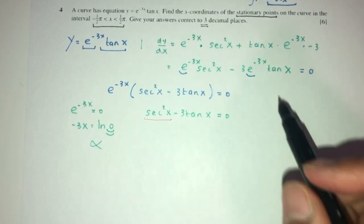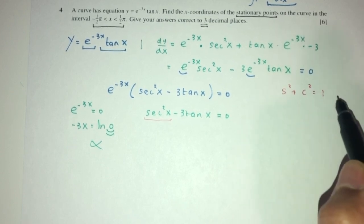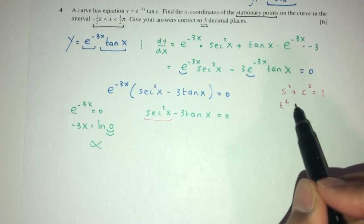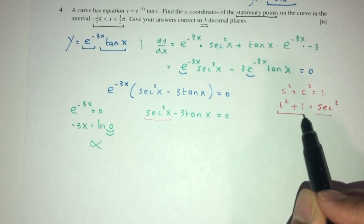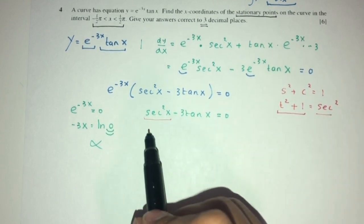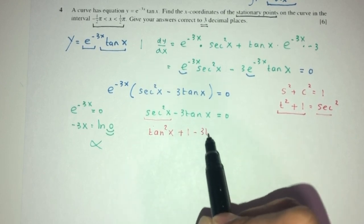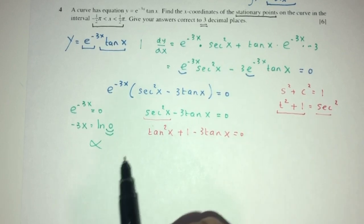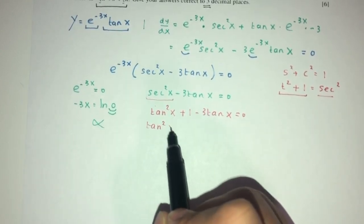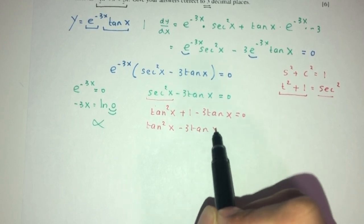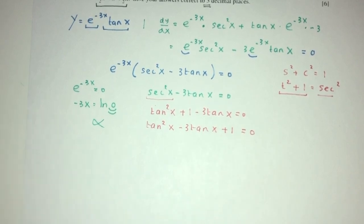By observation, we can see we have tan here and sec squared x. We have seen this before: when you have sin squared plus cos squared equals 1 and we divide by cos squared, you get tan squared plus 1 equals sec squared. So sec squared is tan squared x plus 1. Replacing, you will have tan squared x plus 1 minus 3 tan x. Rearranging, you will have tan squared x minus 3 tan x plus 1 equals 0.